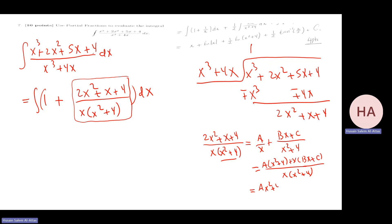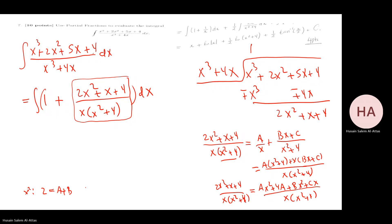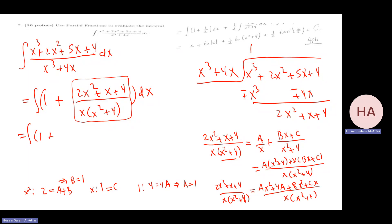I need to find A, B, C. Coefficient of x squared: A + B = 2. Coefficient of x: C = 1. Constant: 4A = 4, so A = 1. If A = 1, then B = 1. The integral becomes: integral of 1 + 1/x + x/(x squared + 4) + 1/(x squared + 4) dx.